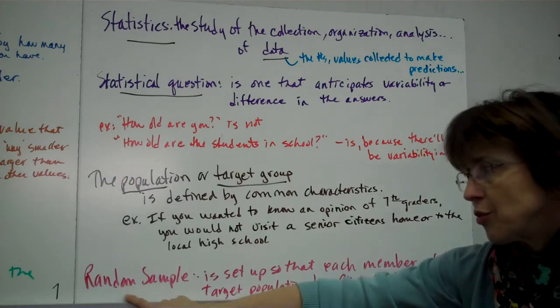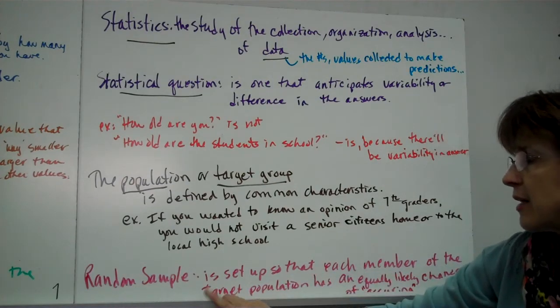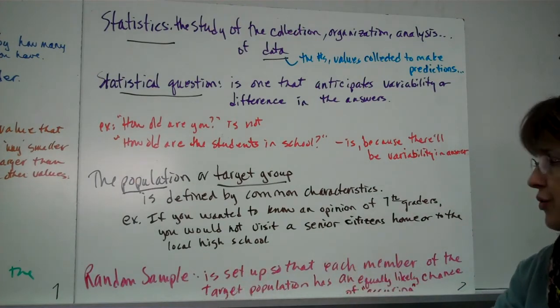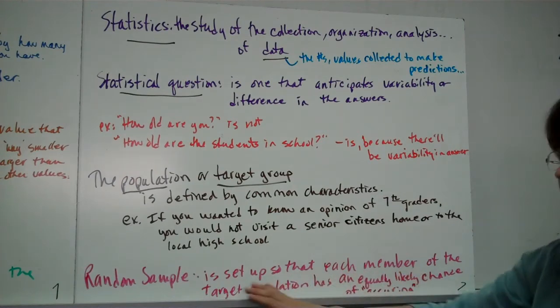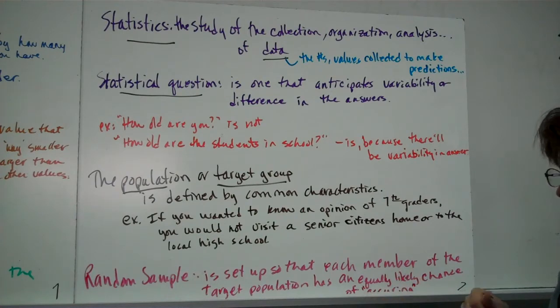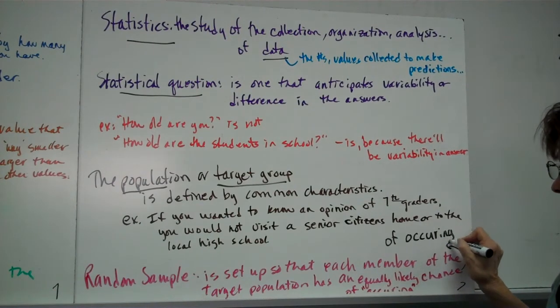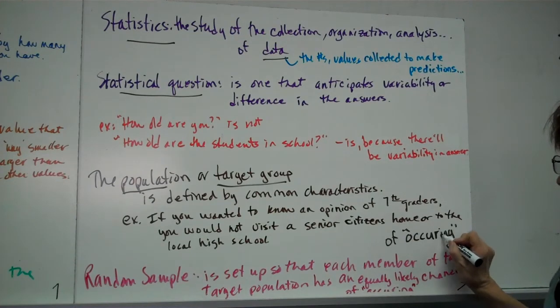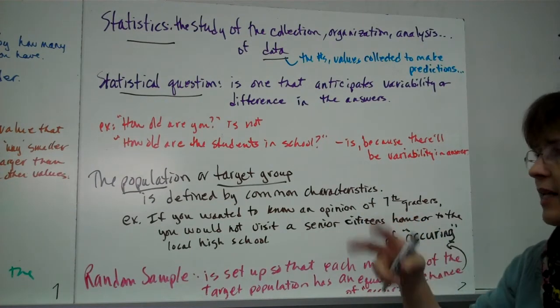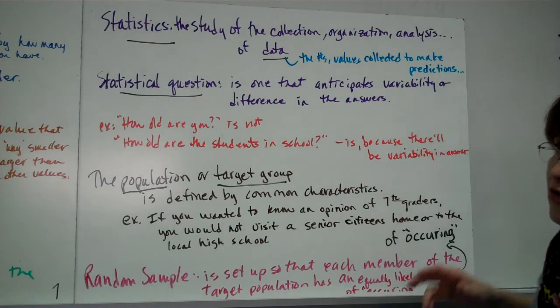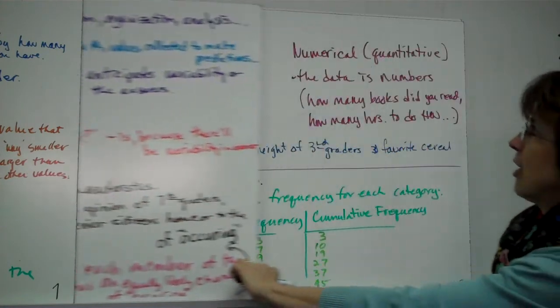A random sample is a very important concept you want to understand. It's set up, a random sample is kind of who you're going to ask your question to, but you have to set it up so that each member of that target population has an equally likely chance of occurring. I use that word occurring very generally. In other words, if you want to interview the 7th graders, you've got to set up your sample so that everybody has an equally likely chance of getting picked to be asked that question. All right? We'll talk more about it as we go.